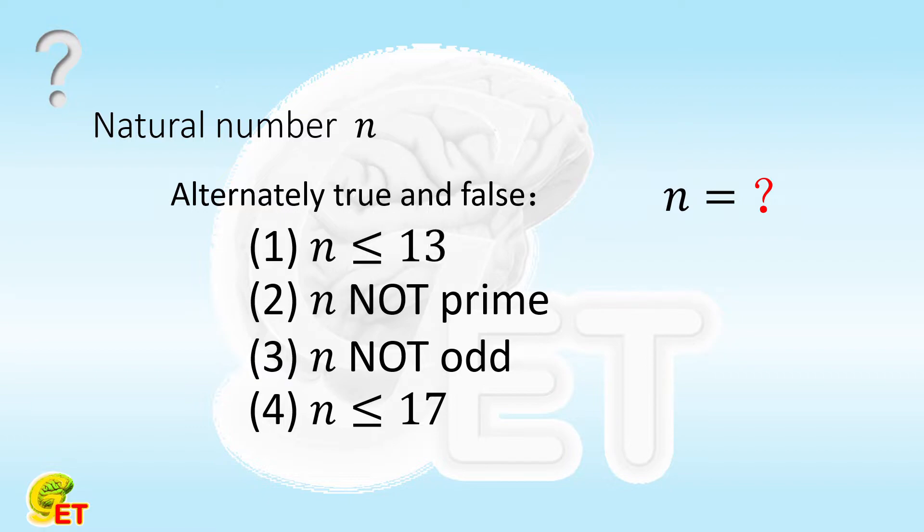Regarding the so-called alternately true and false, in fact, there are only two possibilities. Either statements 1 and 3 are true, and 2 and 4 are false. Or statements 2 and 4 are true, and 1 and 3 are false.